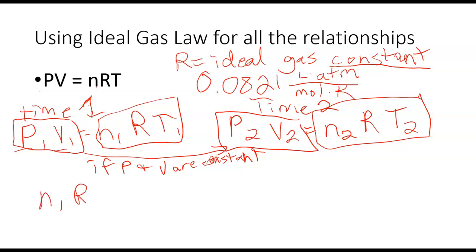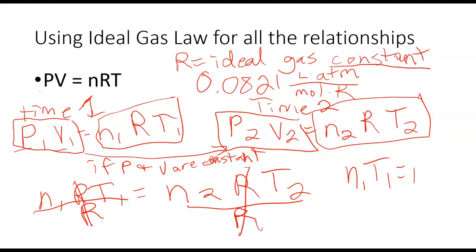So n1RT1 equals n2RT2. R is the same, it's on both sides of the equation. Let me just divide by R on both sides. So R over R is going to give me one. So I'm going to be left with a relationship of n1T1 equals n2T2.